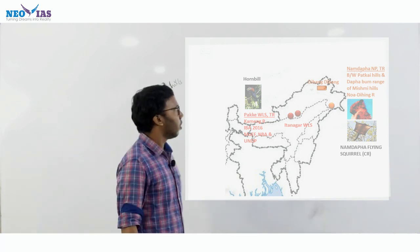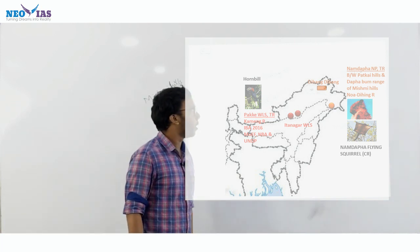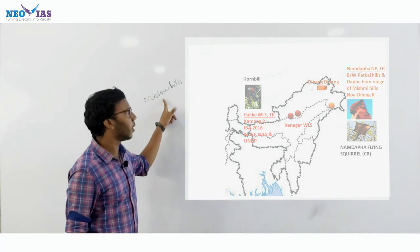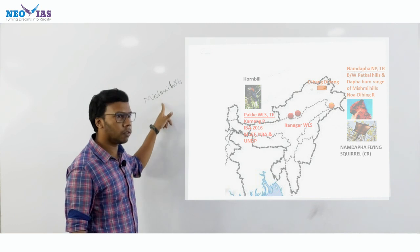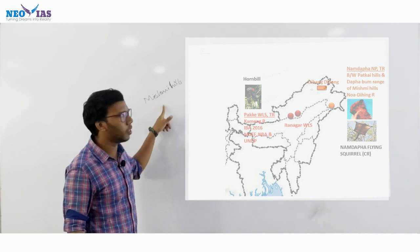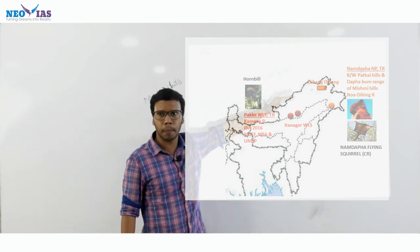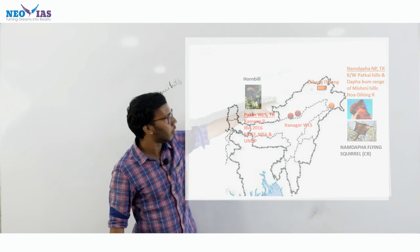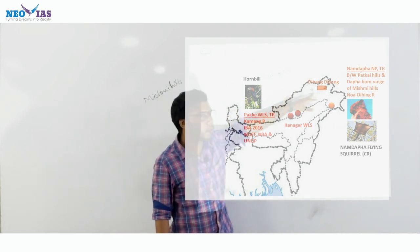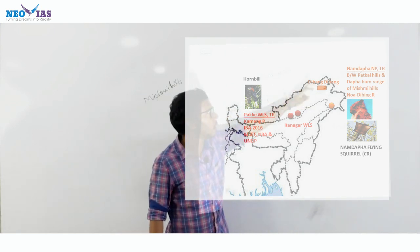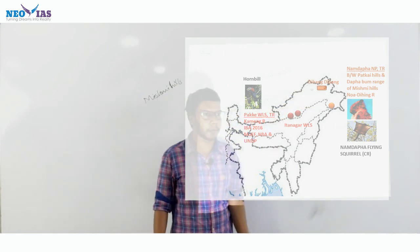Under Mishmi Hills, we are having a Biosphere Reserve in Arunachal Pradesh — that is, Dibang Biosphere Reserve. And the cores of Dibang are Mowling and Dibang.